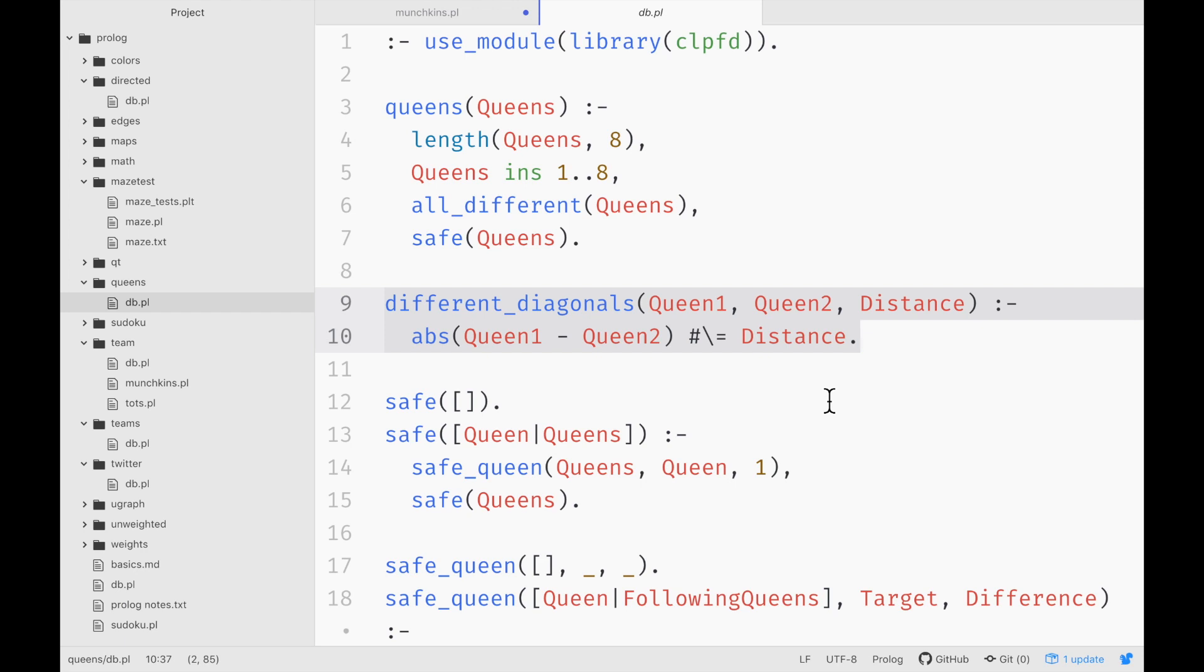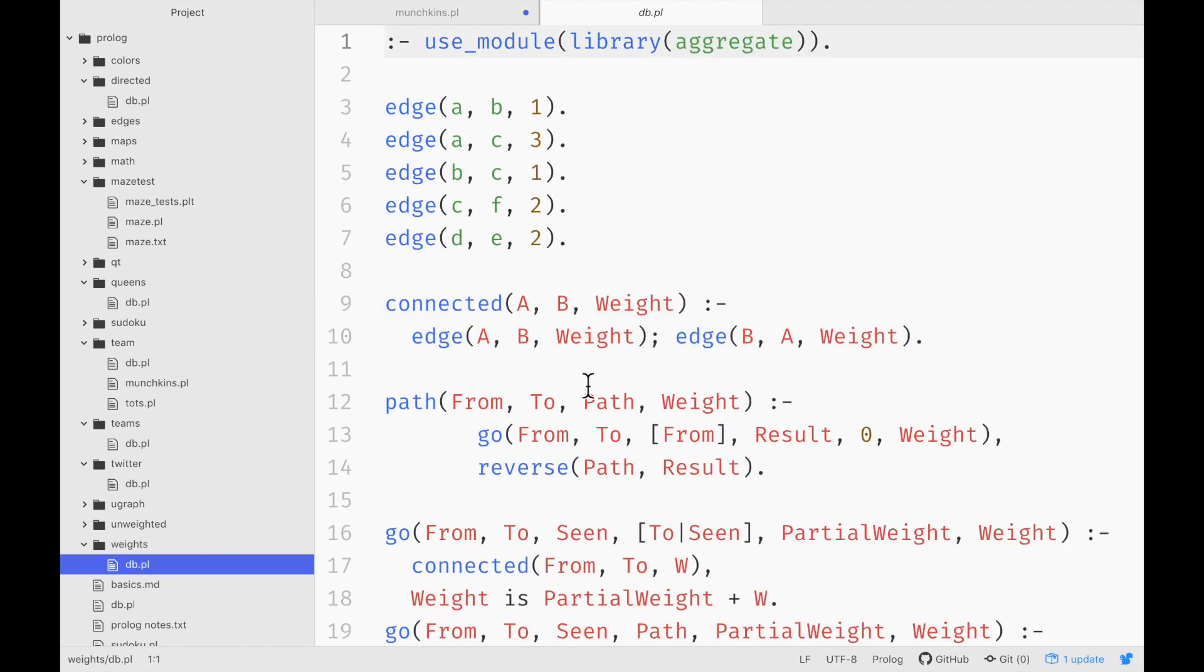And in fact, one of the ways that you can use a graph is with weights. So for example, I might have these edges and each edge has a weight. So maybe this weight is something that's positive, like the amount of money that I can make by going from A to C. And maybe it's negative, like the amount of gas that I might use by driving from B to C.